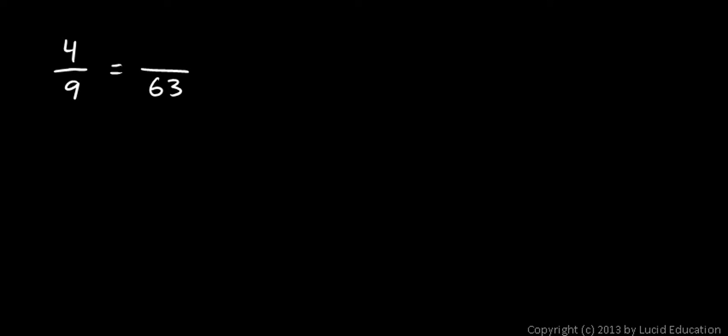Well, I ask myself, to get a 9 to a 63, I have to multiply by 7. So going from 9 to 63, I multiply by 7. If I multiply the denominator by 7, I have to multiply the numerator by 7 also. So 4 times 7 is 28. So I write 28.